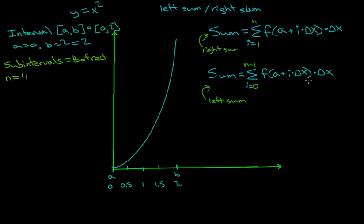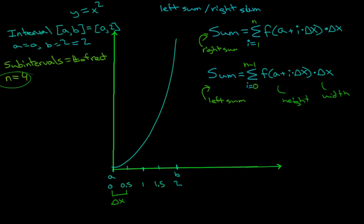This f of something returns a y value, so this is the height. We're just taking the height times delta x, which is our width. The distance between each point is delta x. So we take an f value of something and multiply it by a width, and we get an area — then we sum up all the areas. With the left sum starting at i equals 0 with n equals 4, we go 0, 1, 2, 3. With the right sum we go 1, 2, 3, 4. This means we have four rectangles; we plug in the value of i into the formula.